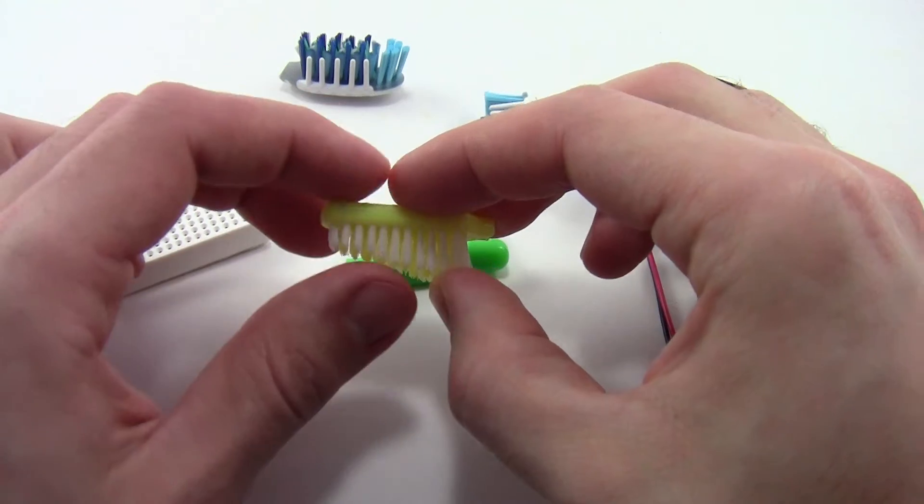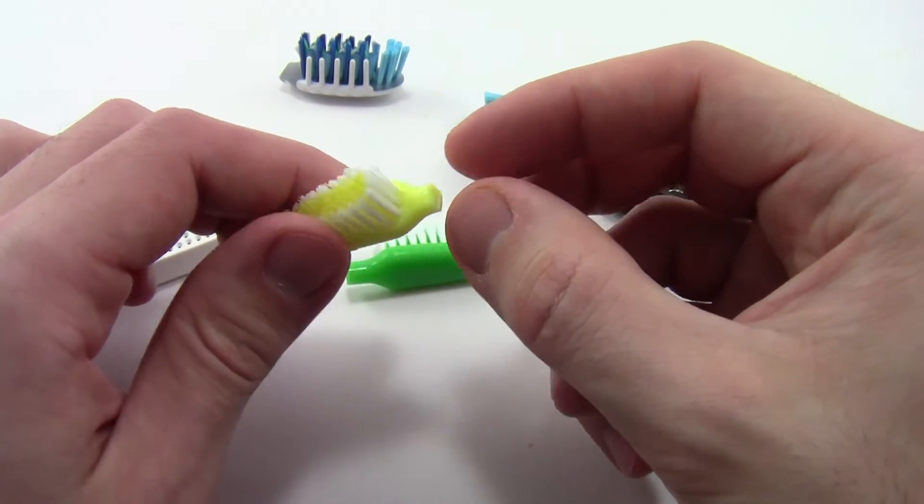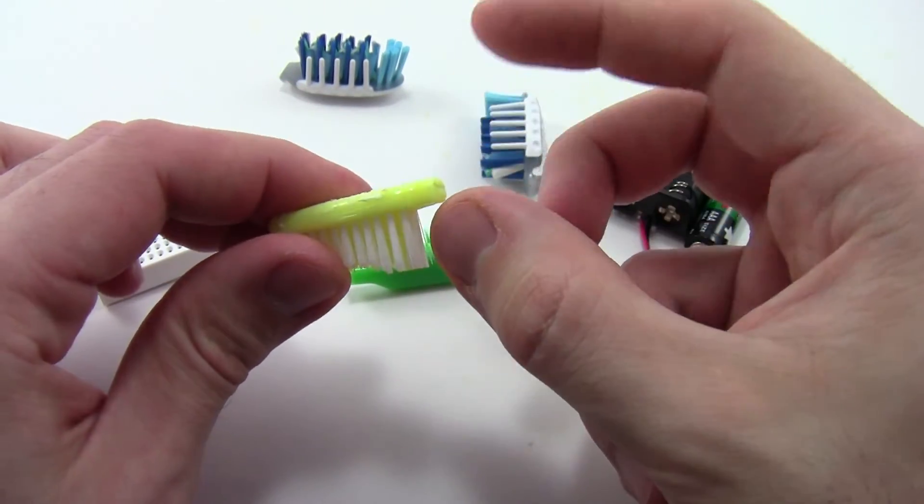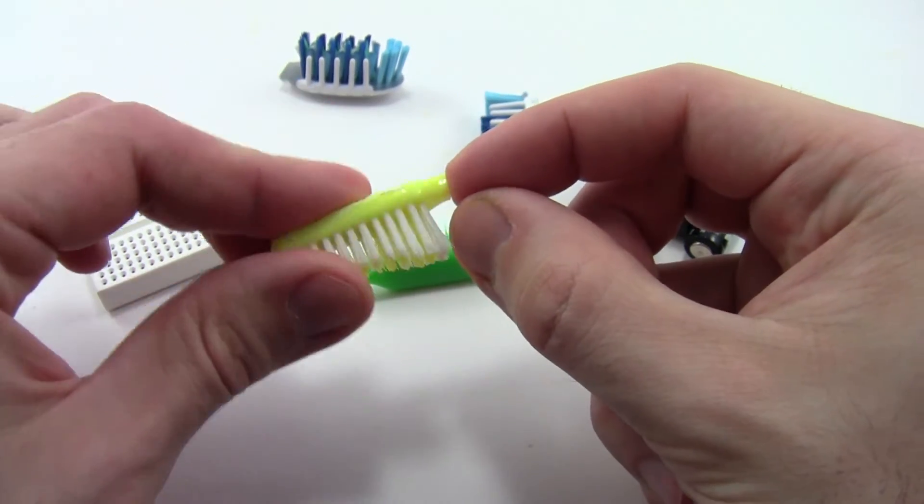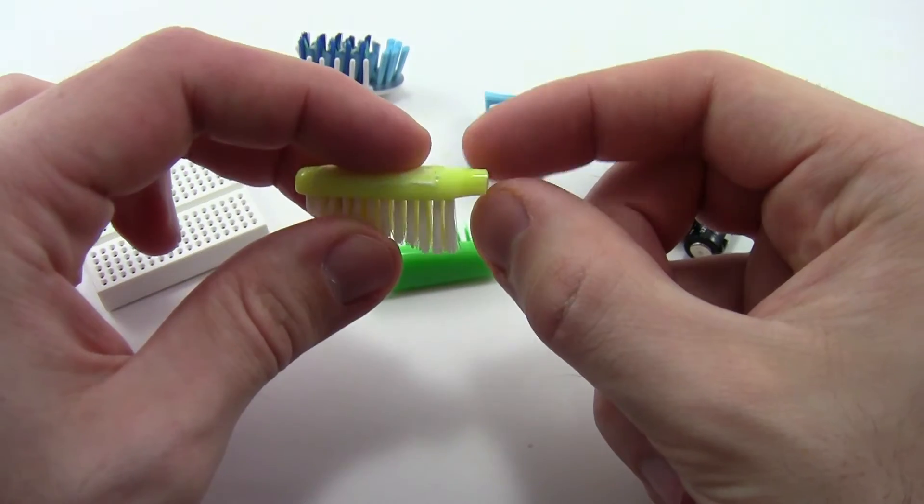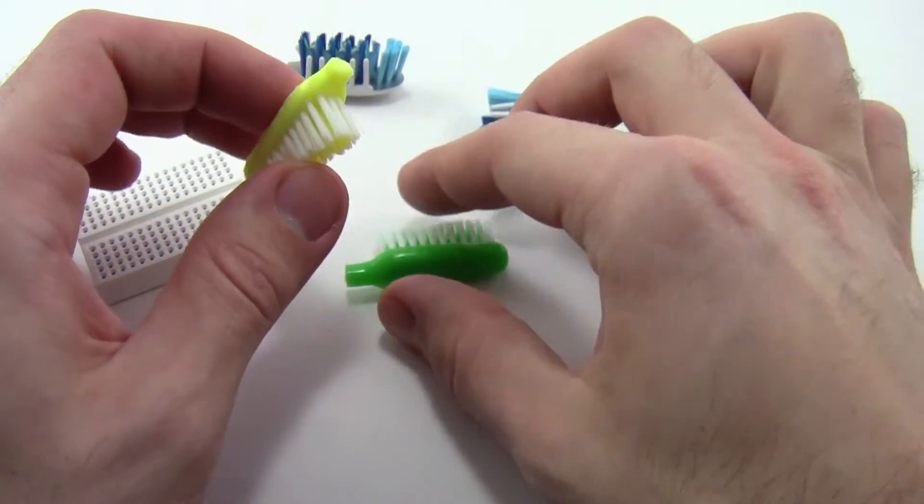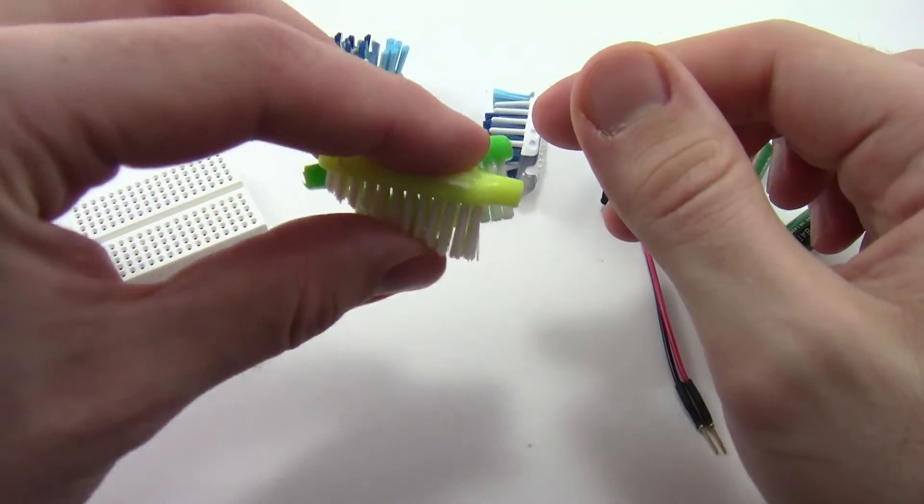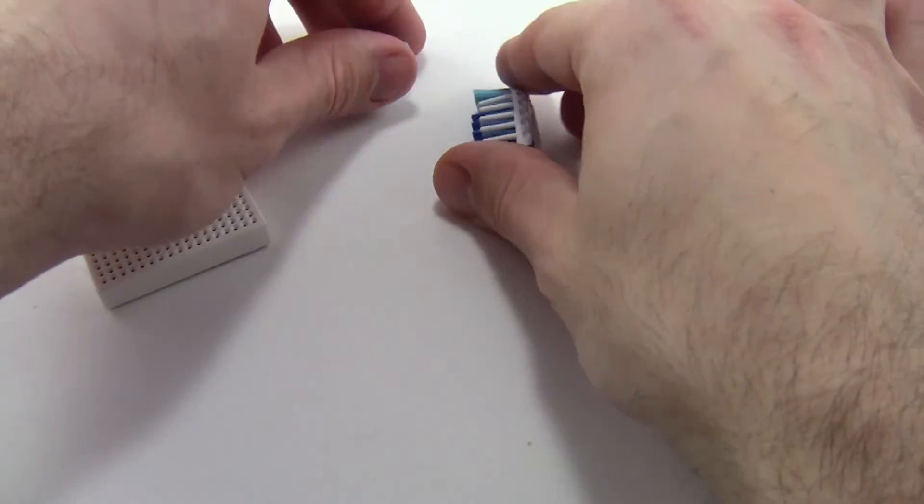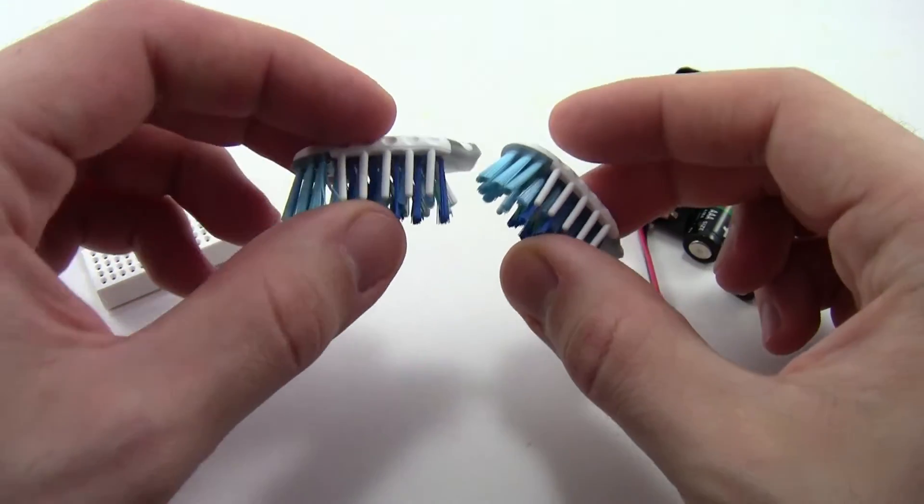So regardless of what you wind up buying, you're going to want to use scissors or diagonal cutters or heavy pliers to cut the heads off the toothbrush. You might not be able to cut all the way through, in which case you can bend it back and forth to snap it. And then you're going to attach everything to the breadboard, which serves as the body of the robot.